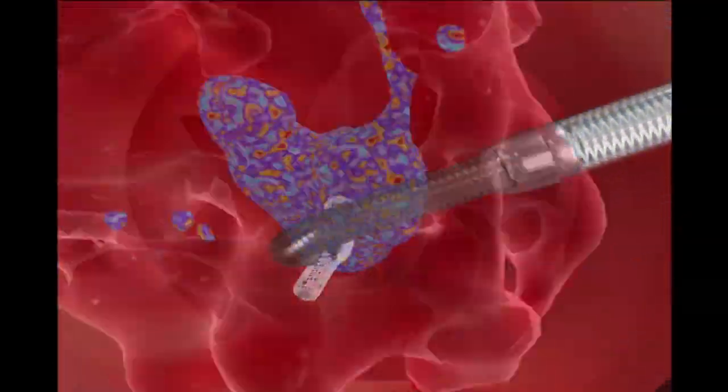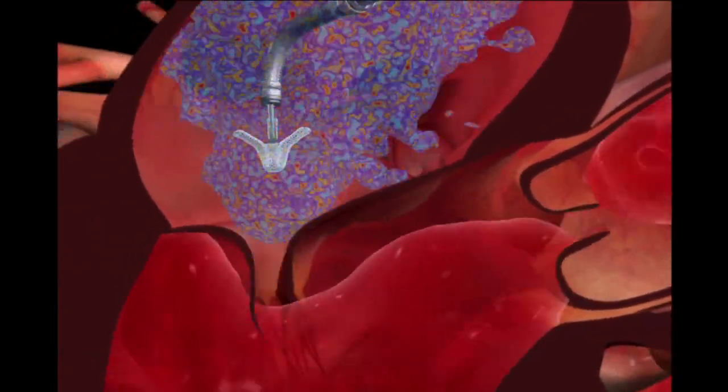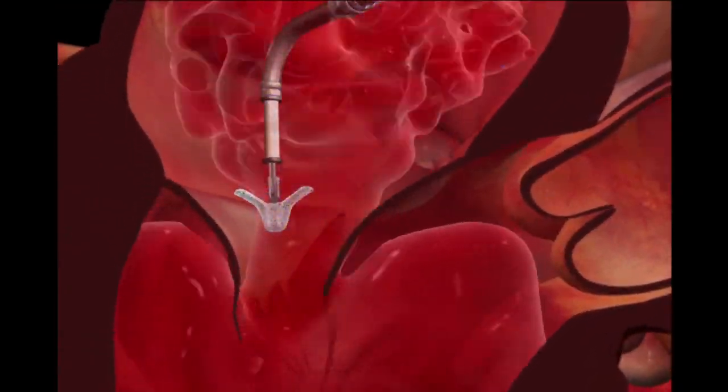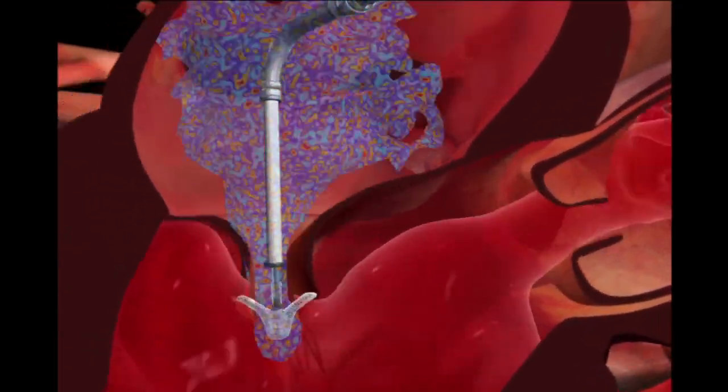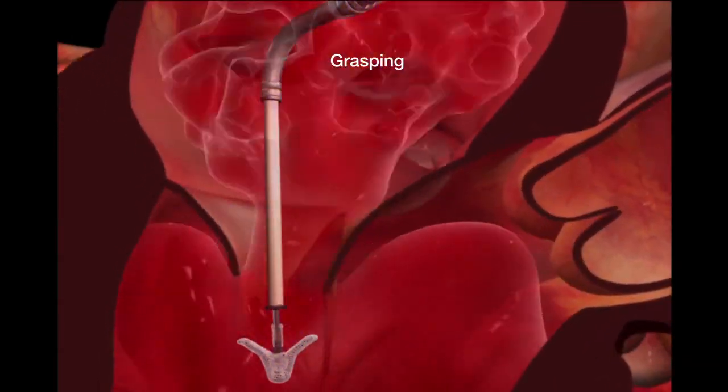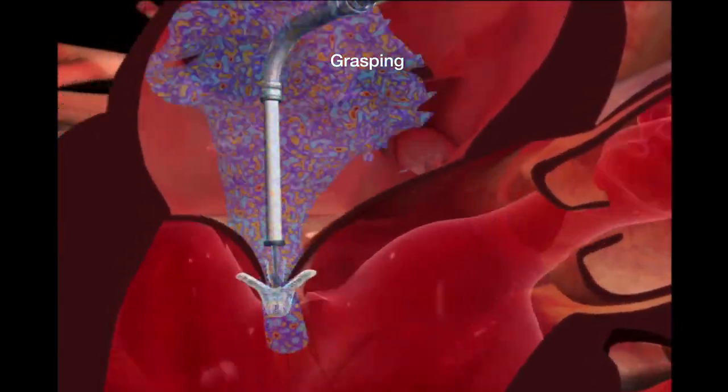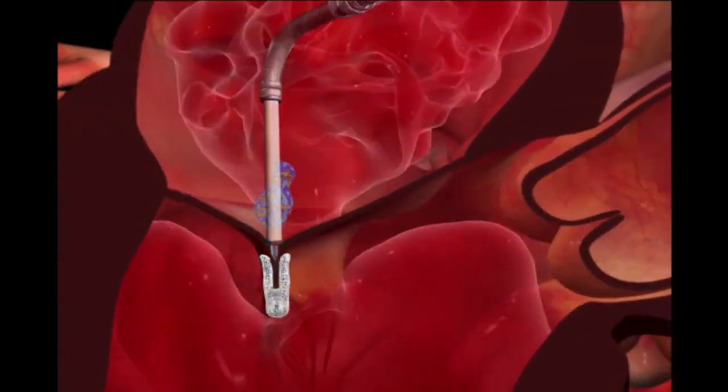Color ultrasound imaging identifies the severe MR illustrated here with blue flow. The clip is advanced into the left ventricle below the valve leaflets. The clip is retracted and closed to hold the leaflets together to reduce MR.